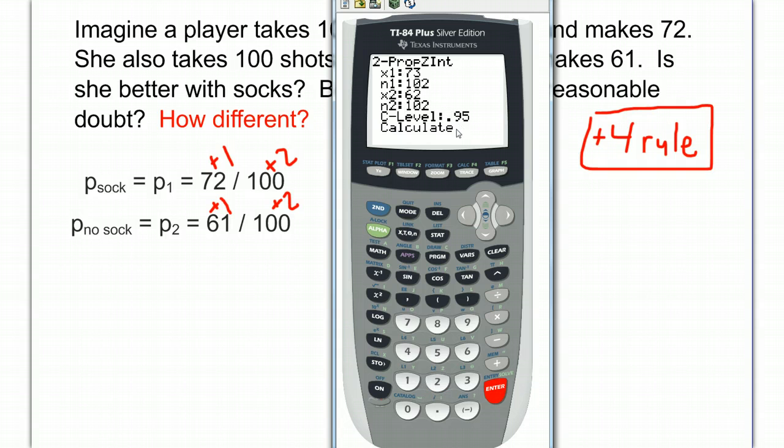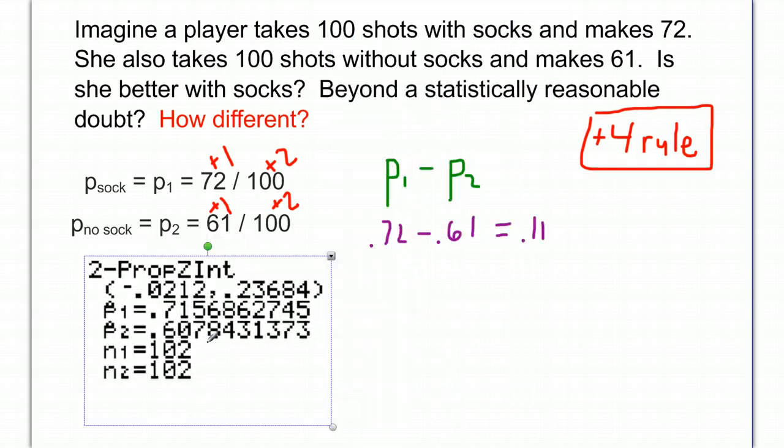For our confidence level, 95% is pretty standard, so that would be just fine for right now, but you could do other levels also. When we calculate it, we get something that looks like this.